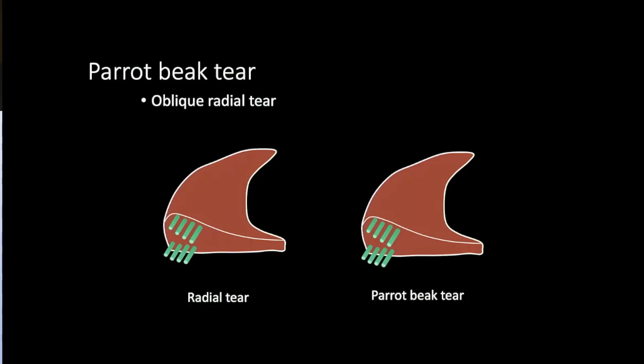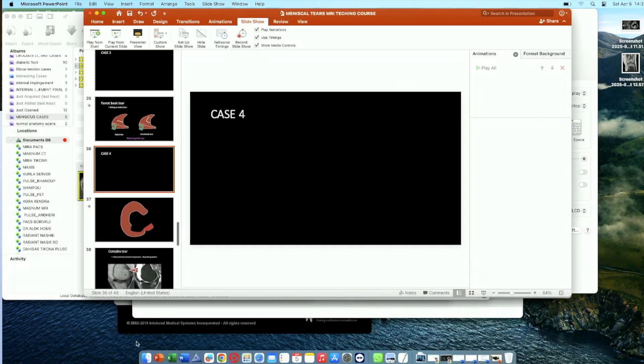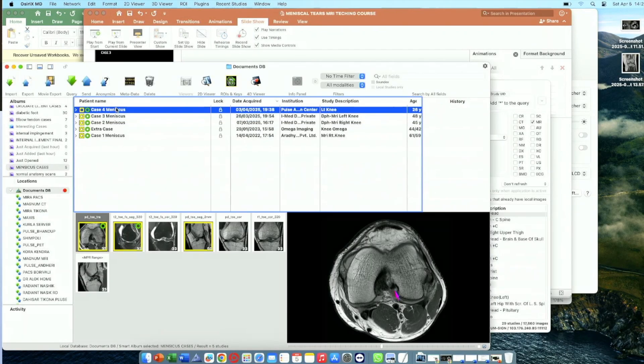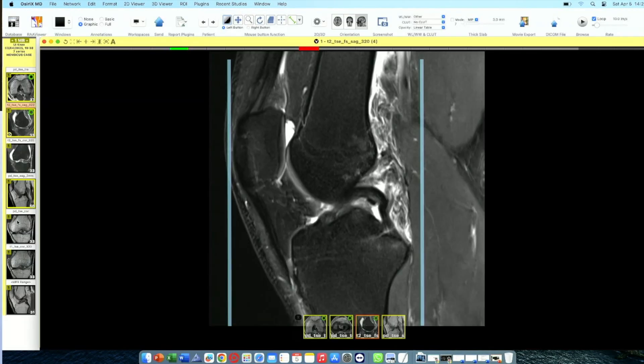To summarize: a parrot beak tear shows a marching cleft sign. If you don't have the axial image, look in the triangular fashion — the signal will move from the apical free margin to the periphery of the meniscus. Let's look at the last case to finish the meniscus session.